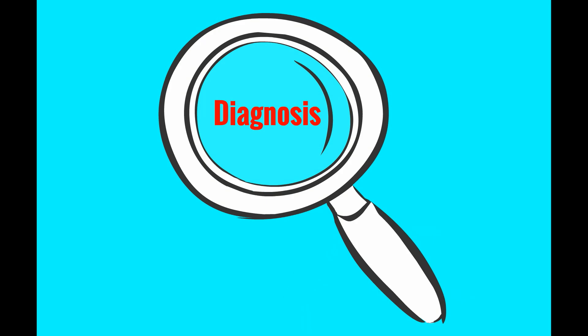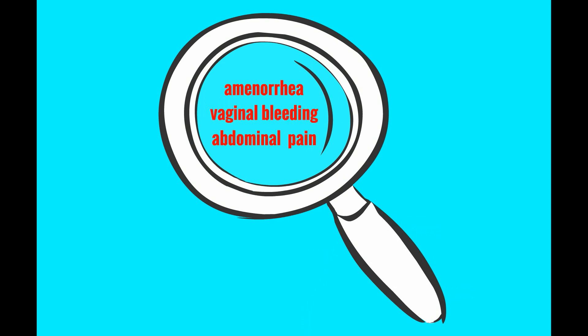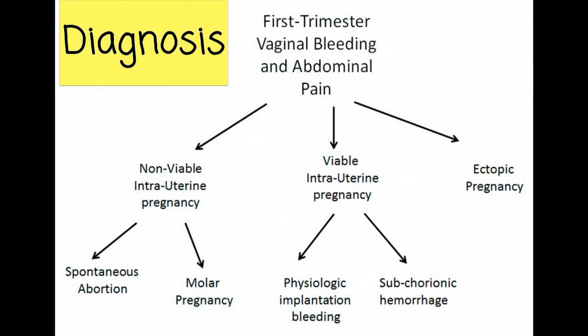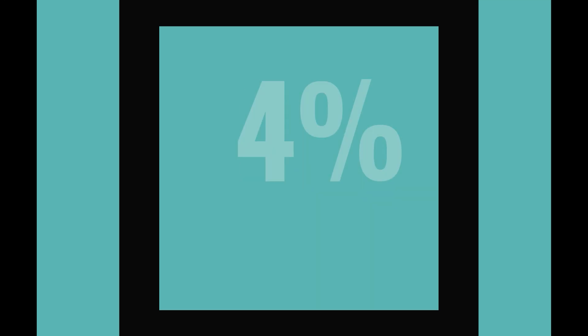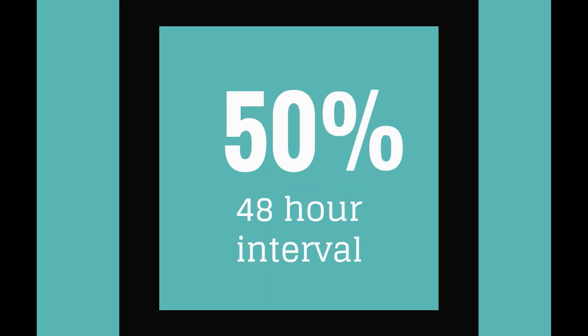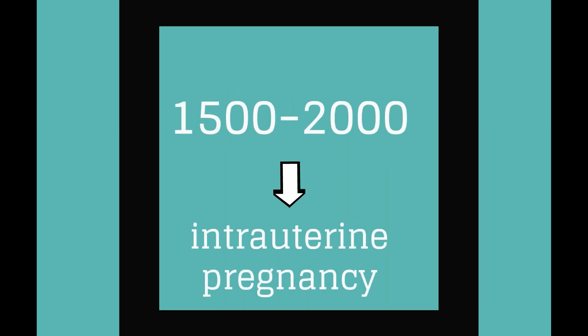The diagnosis of ectopic pregnancy involves a high index of suspicion. The classic symptoms are amenorrhea, vaginal bleeding, and abdominal pain. Diagnostic testing involves serum beta HCG measurements and transvaginal ultrasound. Serial beta HCG measurements are made at 48-hour intervals to determine if this is a viable intrauterine pregnancy or a non-viable uterine or ectopic pregnancy. The beta HCG should increase by at least 50 percent over 48 hours. When the beta HCG is above approximately 1500 to 2000, an intrauterine pregnancy should be visible on transvaginal ultrasound.